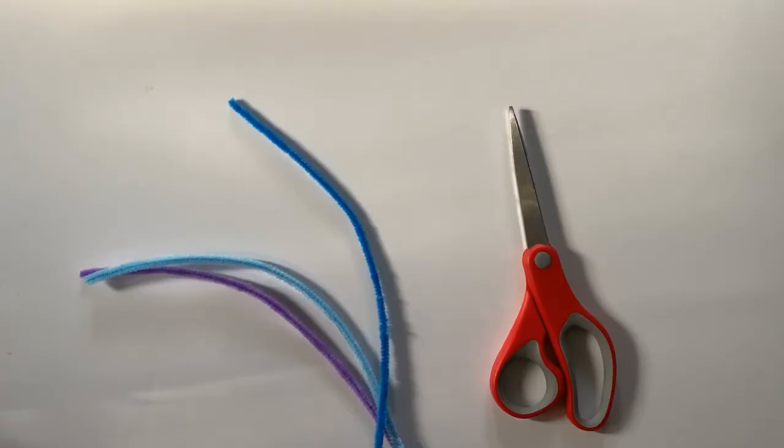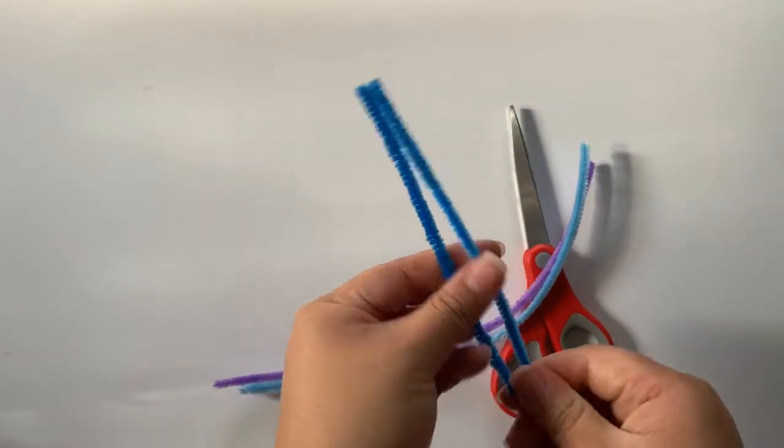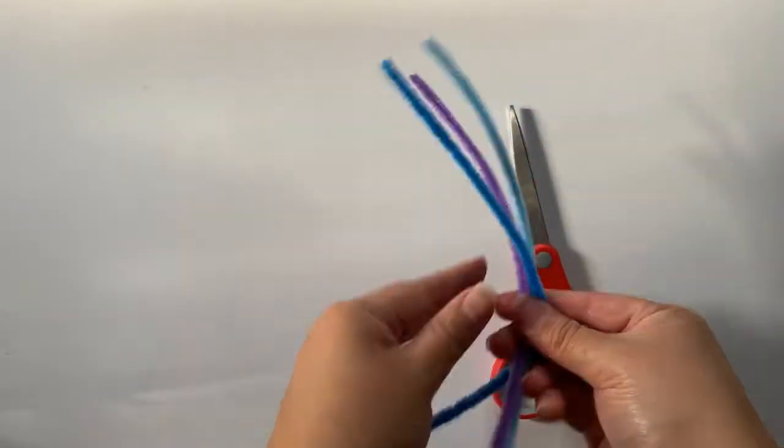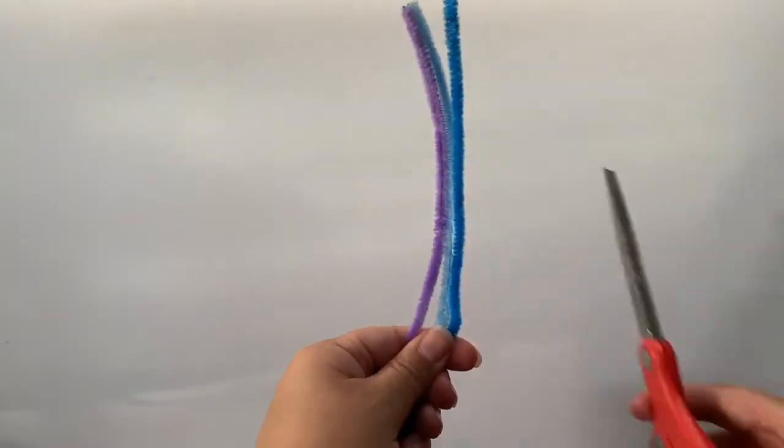For the no sewing version start with three pipe cleaners. Take one and fold it in half as a guide because you'll need to cut these three in half. Use a pair of scissors or some wire cutters.